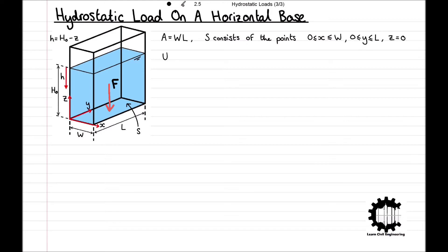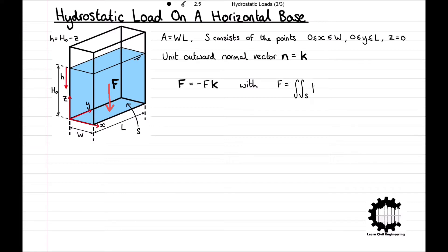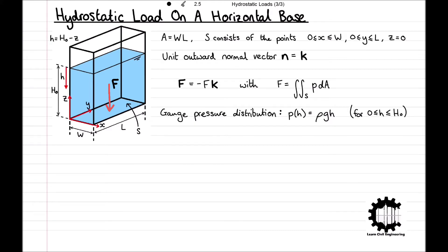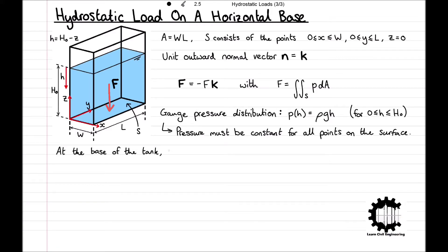The base is horizontal and has unit outward normal vector N equals K. Therefore, taking the equations from the previous video, we have the hydrostatic force F equals minus F·K, with the magnitude F equal to the surface integral of P with respect to A. We also know that the gauge pressure distribution in terms of depth H is P equals rho·G·H for H equals 0 to H equals H0.